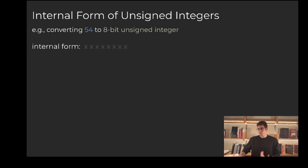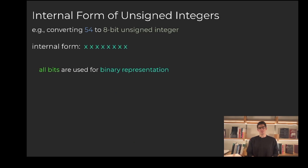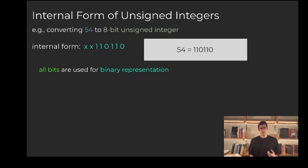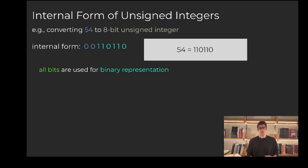Writing the internal form of an unsigned integer is significantly easier because we don't have to keep track of the sign bit. All we do is convert our value into binary, and we just keep adding zeros to the left of the binary representation until all of our bits are used.